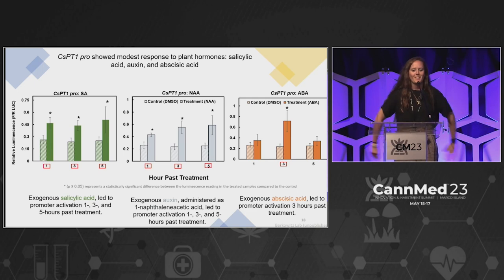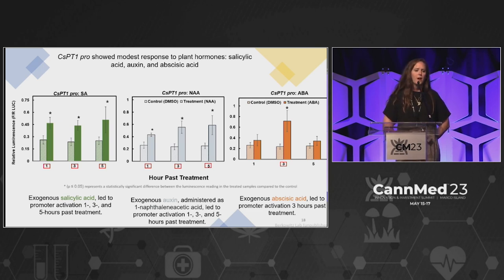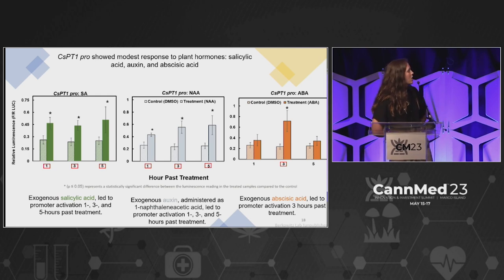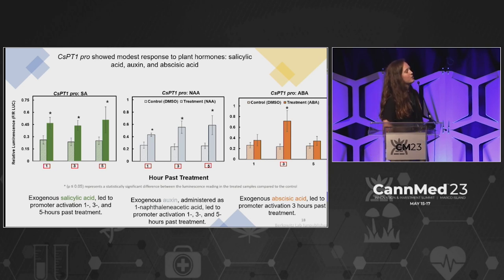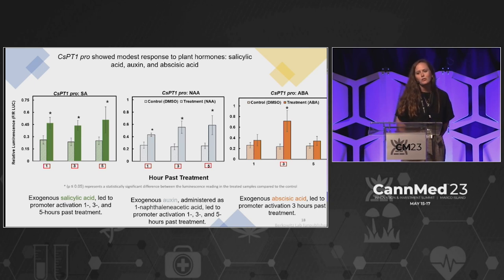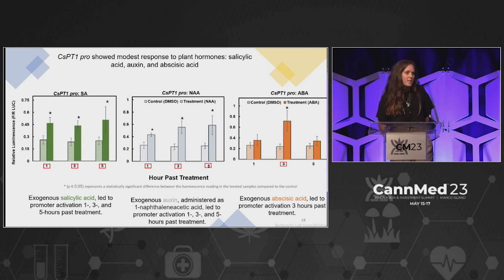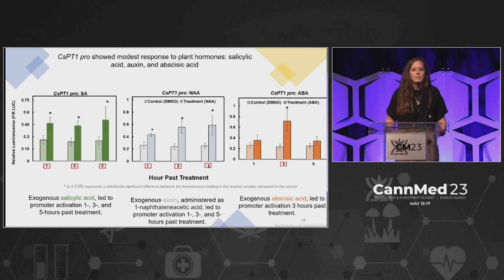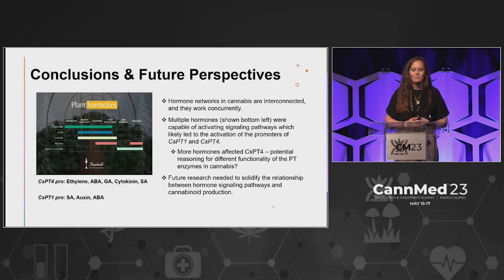While we saw many effects for prenotransferase 4, we also looked at prenotransferase 1. We didn't see as high responses or as many hormones responding in prenotransferase 1's promoter. We did see activation at hours one, three, and five for salicylic acid; at one, three, and five for auxin; and at hour three for abscisic acid. There are different sets of hormones affecting each prenotransferase promoter, suggesting different functionality in these genes and giving insight into how the different prenotransferase genes act in the cannabis plant.